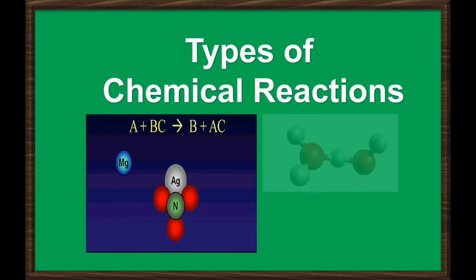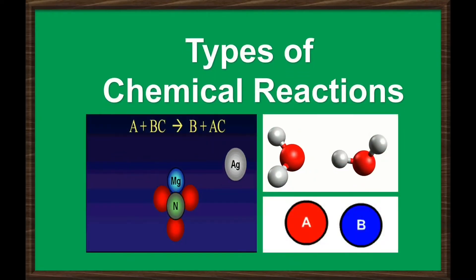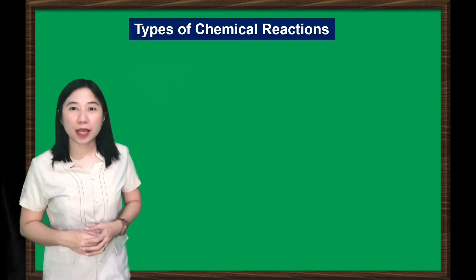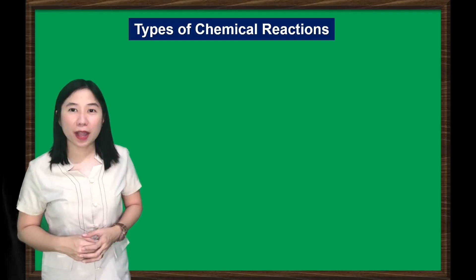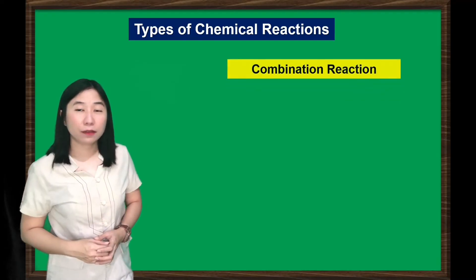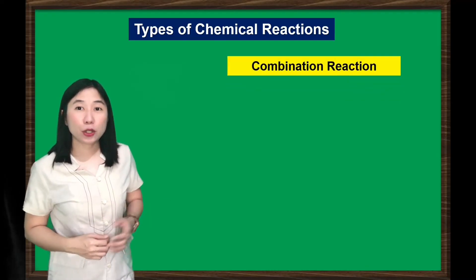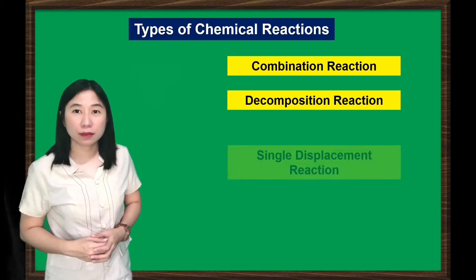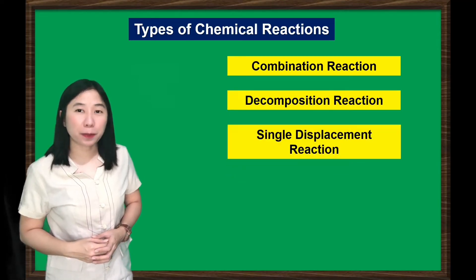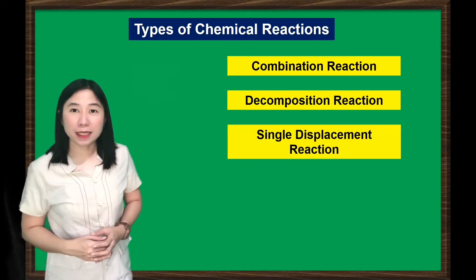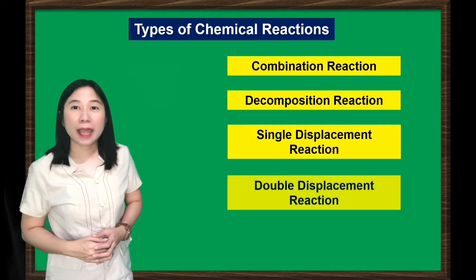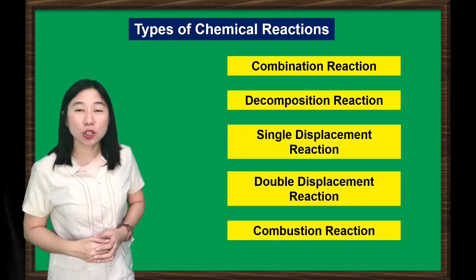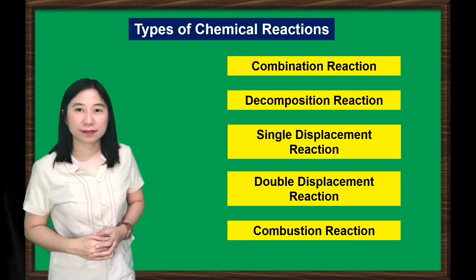Types of Chemical Reactions. Here are the major types of chemical reactions: combination reaction, decomposition reaction, single displacement, double displacement, and combustion reaction. Let's study each type of chemical reaction.